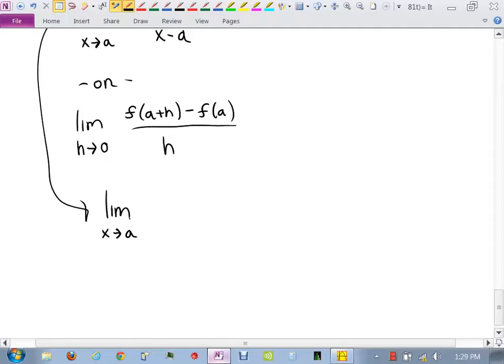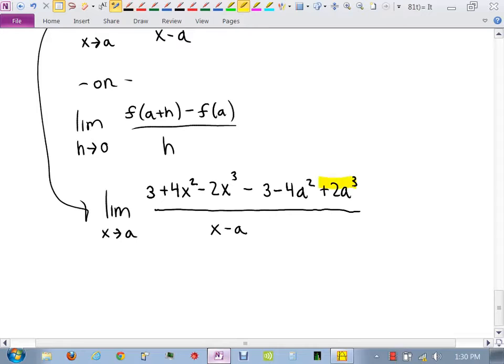Which is a. Now this may not work, okay? This may not be the way we want to go. 3 plus 4x squared minus 2x cubed minus f of a, which is 3 minus 4a squared plus 2a cubed, all over x minus a. Now I did the f of a on the right here. I already distributed the minus sign through. That's critical. Are y'all okay with that up to there?